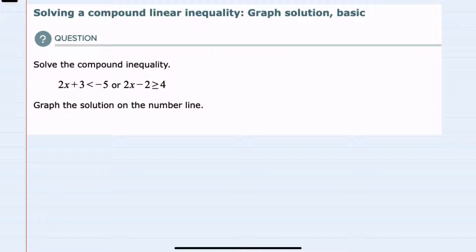We're asked to solve this compound inequality. We have 2x plus 3 is less than negative 5, or 2x minus 2 is greater than or equal to 4.